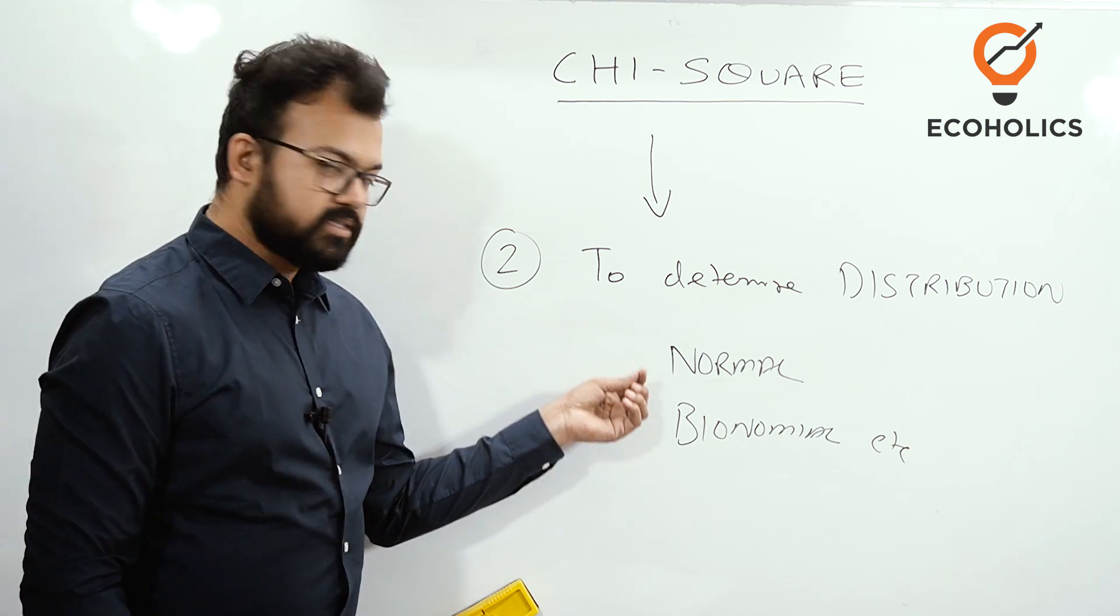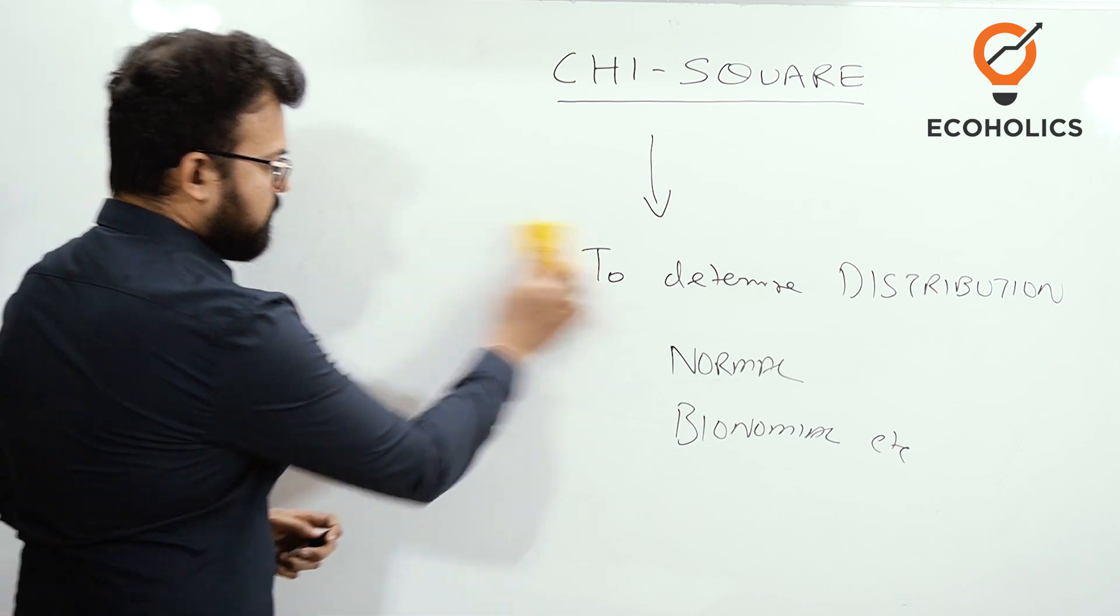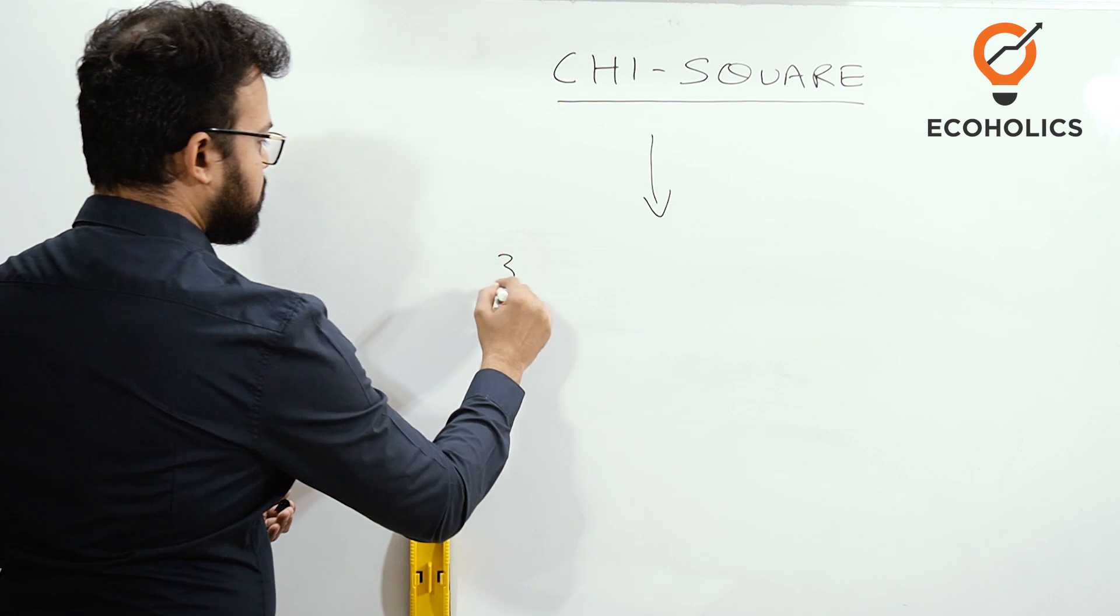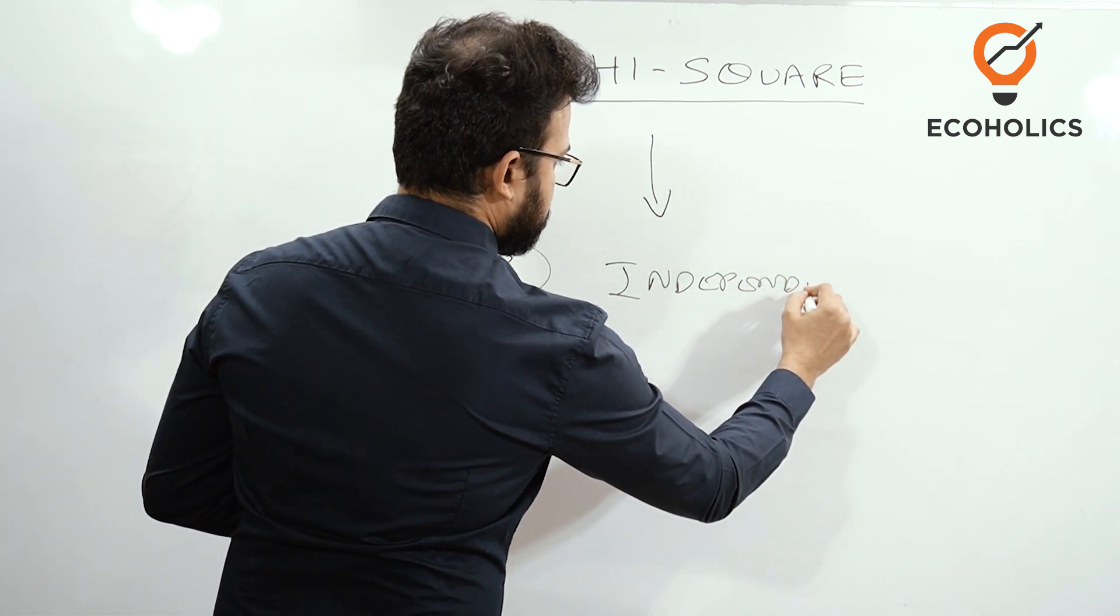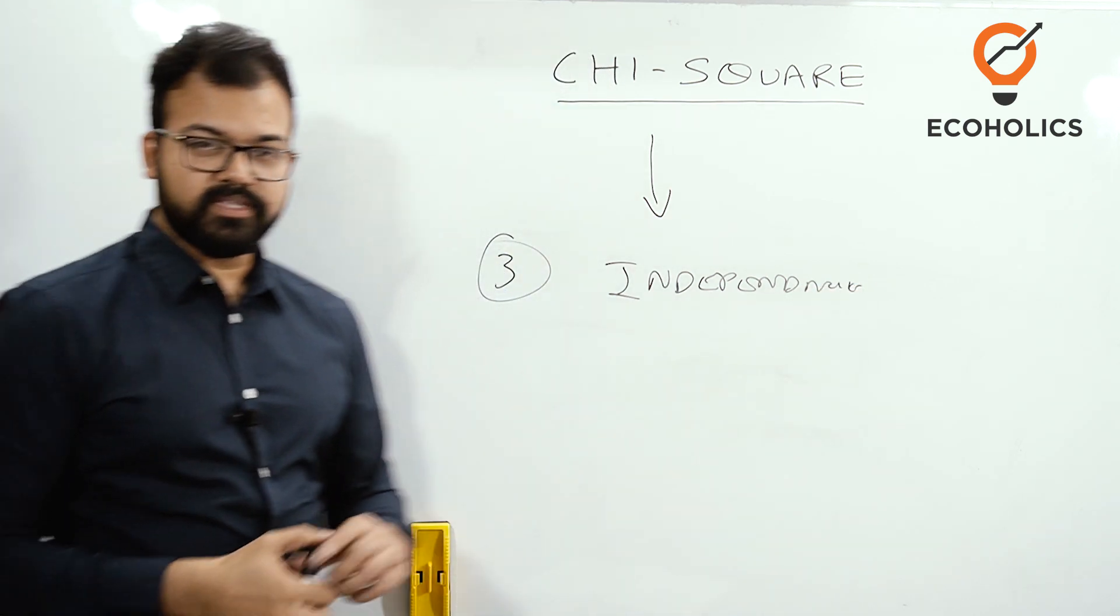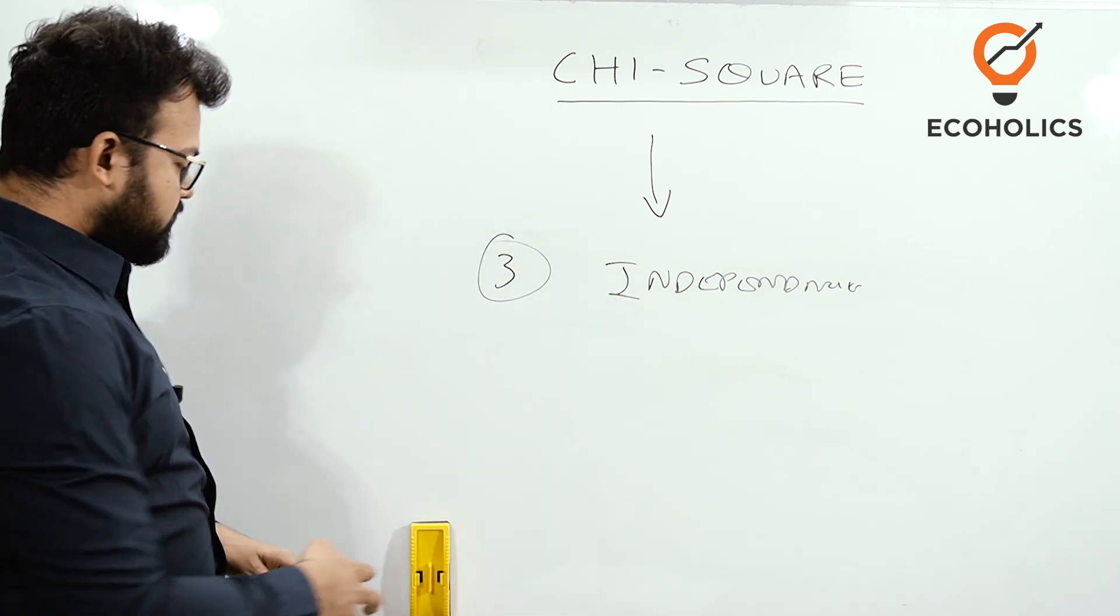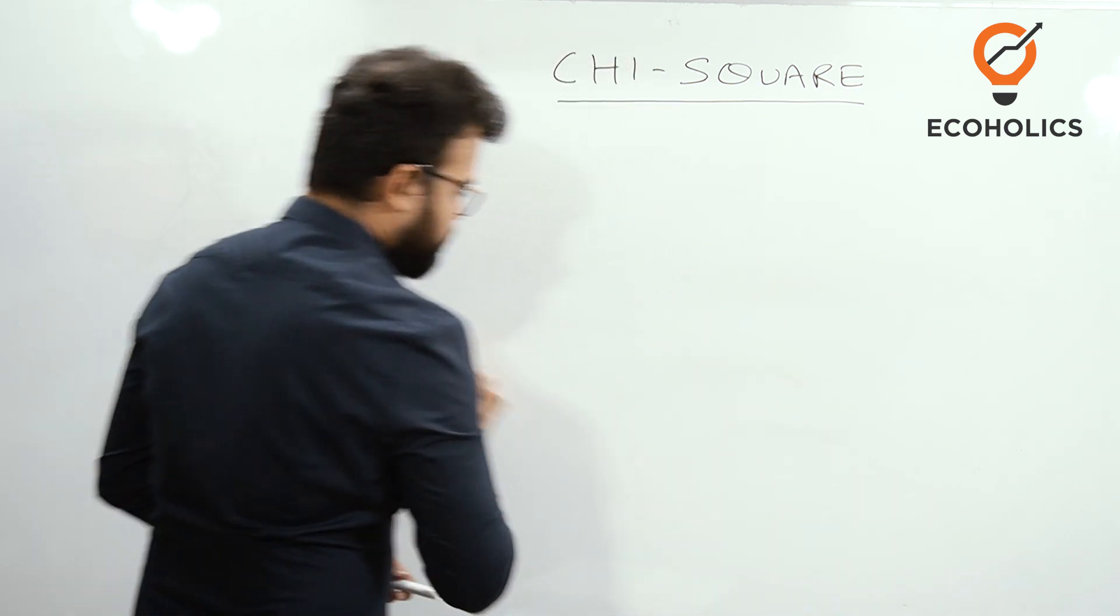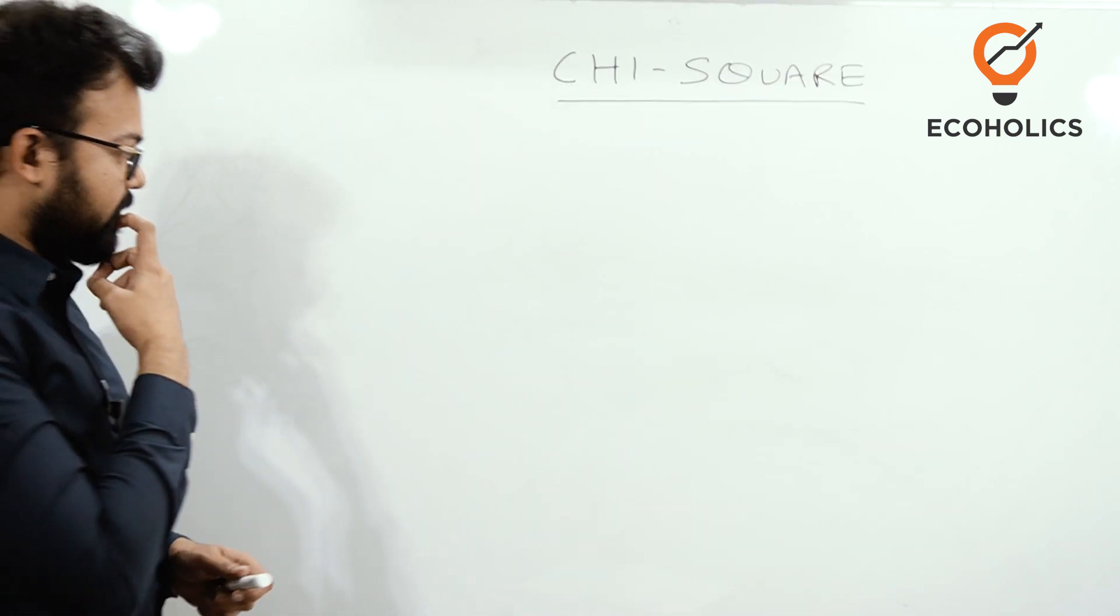The third and last is to determine the independence of the data, whether the data is independent or not. These are the three things you should keep in mind whenever you are giving any exam, because whenever you face questions of chi-square, these three concepts are very important.